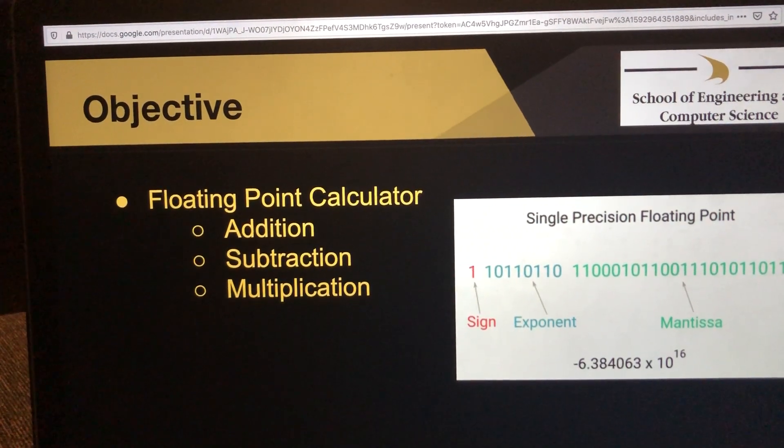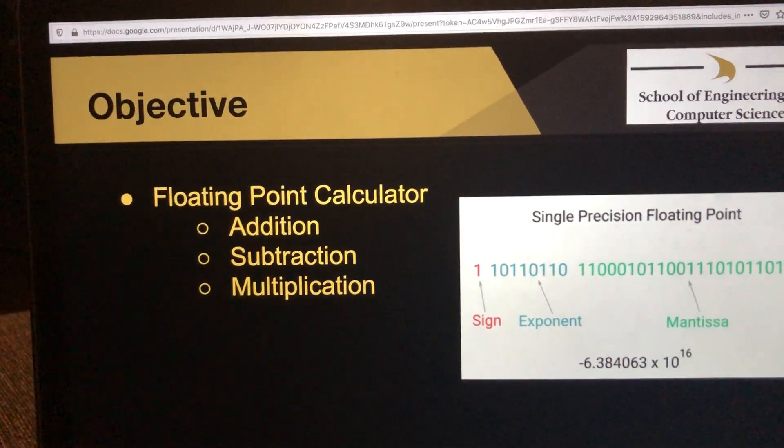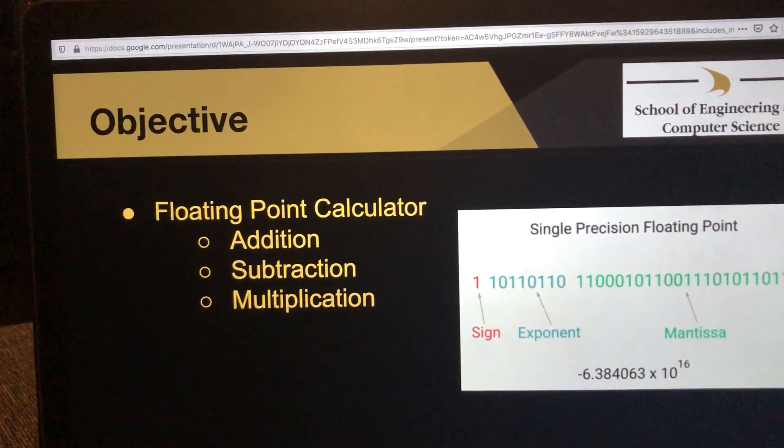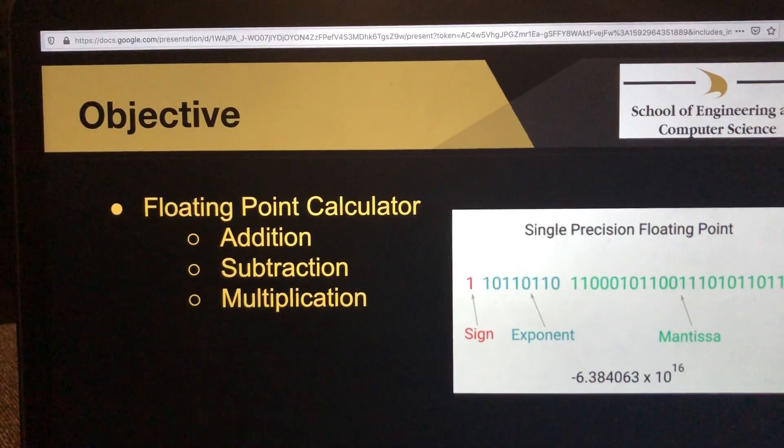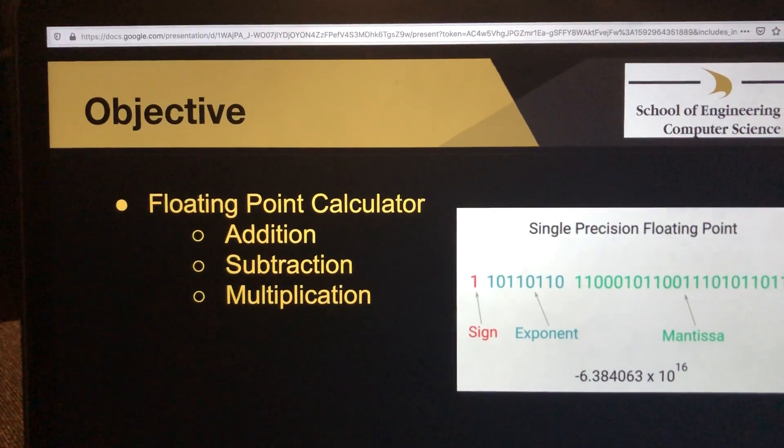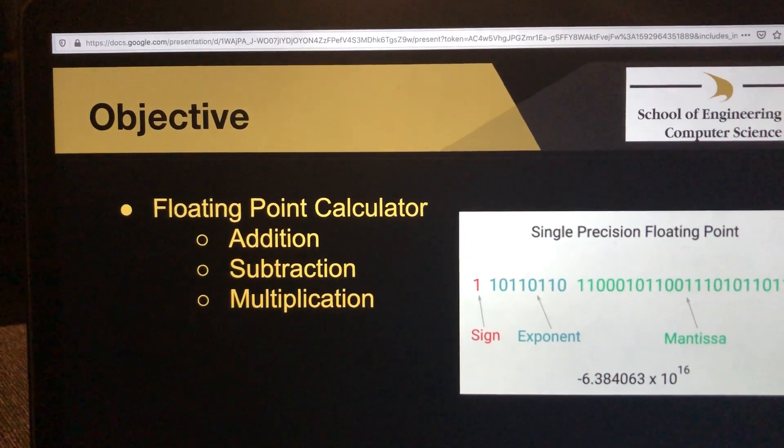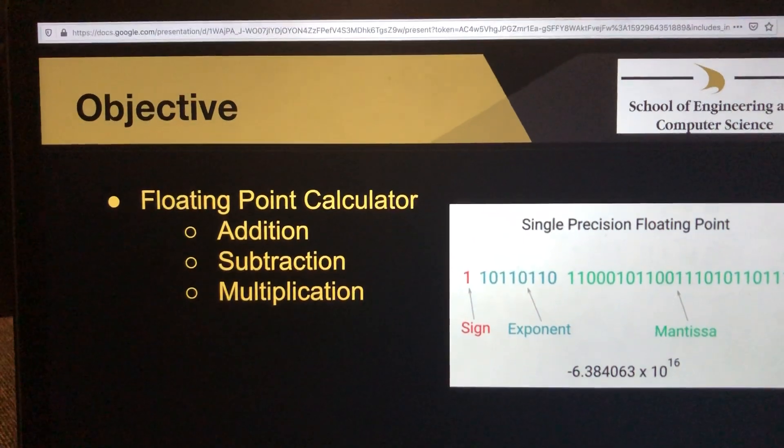The difference between a floating point number and a regular fixed point number is how it's represented. The first bit is sign, which can be 0 or 1, representing positive or negative. The next eight bits are the exponent value.